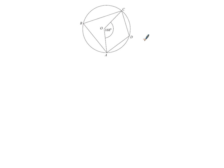Question 22 looks like a circle theorem question. We've got a cyclic quadrilateral A, B, C and D on the circumference of a circle. Opposite angles add up to 180 — so this angle with this angle adds to 180, and equally C with A also adds up to 180. The angle we're given is 168 degrees and we need to find angle ADC.